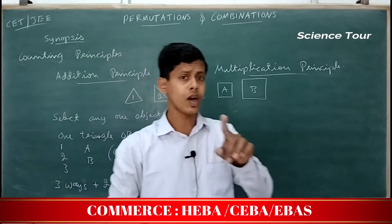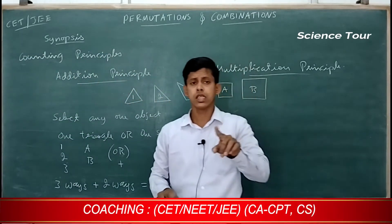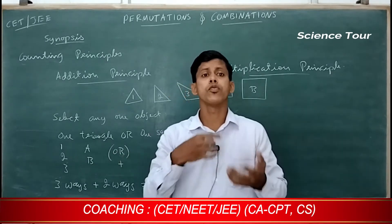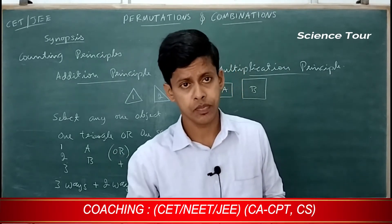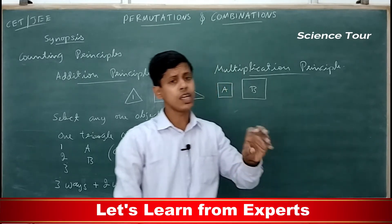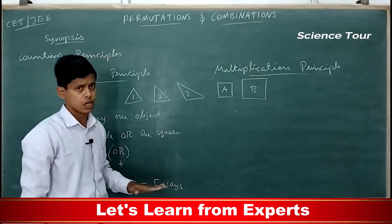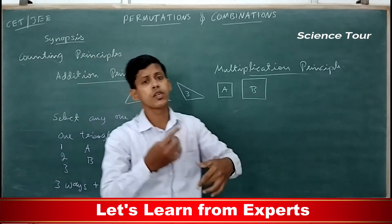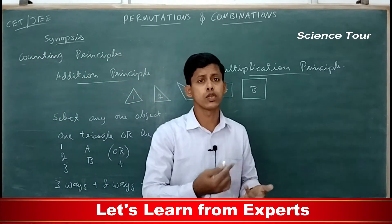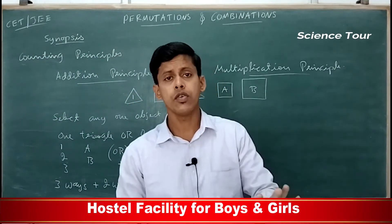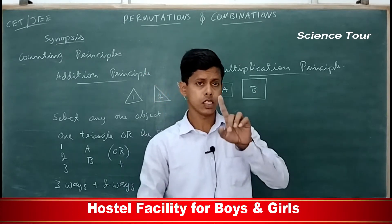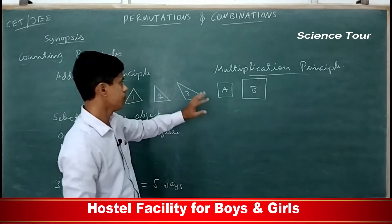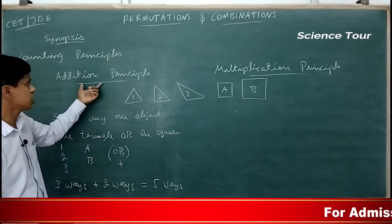You are asked to select only one object, but the question is not how many objects you are selecting — the question is how many ways you can do that job. There are totally five ways you can perform this operation. That is called the addition principle.